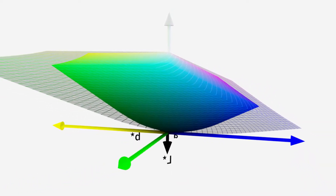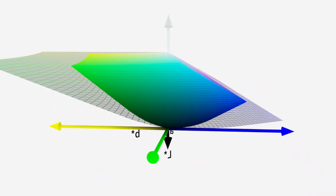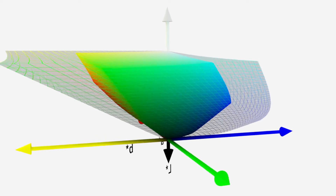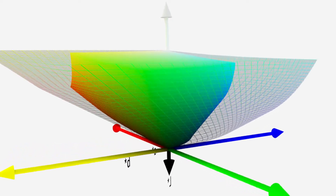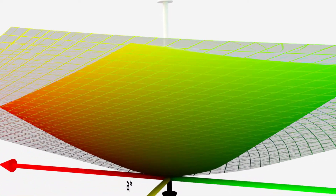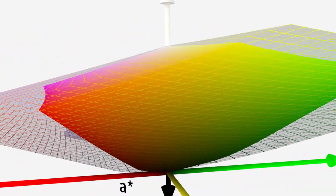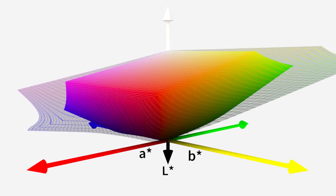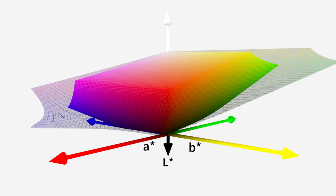Distances in LAB space are roughly proportional to perceived color differences, enabling Imatest to quantify color error.